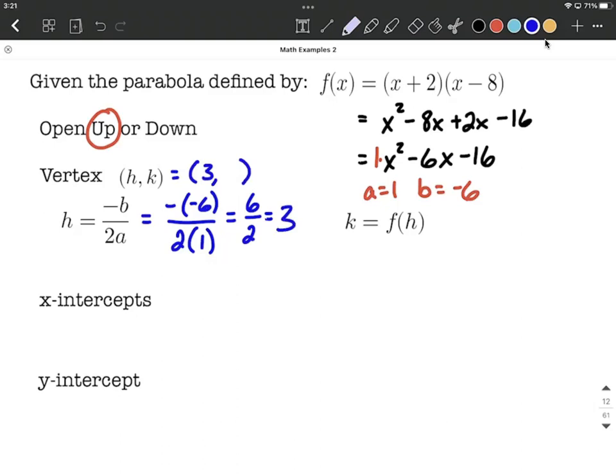To get the y value for our vertex, we simply take this x value and substitute it back into the original function. You can use the factored version or the expanded version, the general form. I'm going to go with the original version.